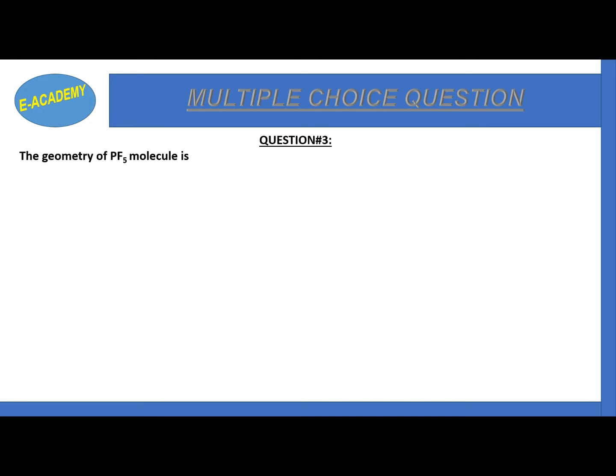Number 3. The geometry of PF5 molecule is planar, square planar, trigonal, trigonal bipyramidal, or tetrahedral. The correct option is option C, trigonal bipyramidal.